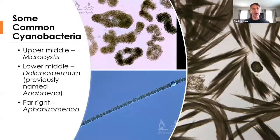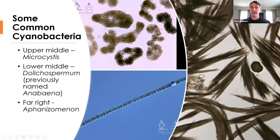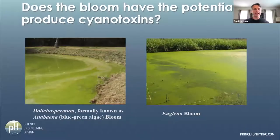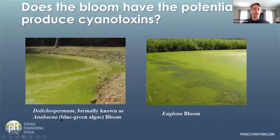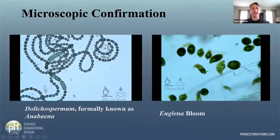Here are some of the more common cyanobacteria under the microscope. This is Microcystis. This is Dolichospermum — it used to be called Anabaena. The clear cell here is the heterocyst — that's where a cyanobacterium can fix nitrogen from the atmosphere. And finally, we have Aphanizomenon. If your lake looks like it has grass clippings in it, it's probably Aphanizomenon. Just because the water looks nasty doesn't necessarily mean you have a cyanobacterium or cyanotoxin — microscopic confirmation is needed to identify whether we have cyanobacteria or something that does not produce cyanotoxins.